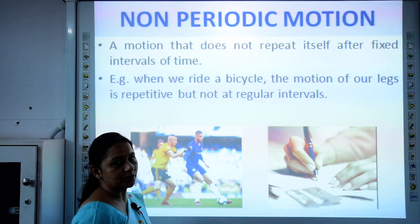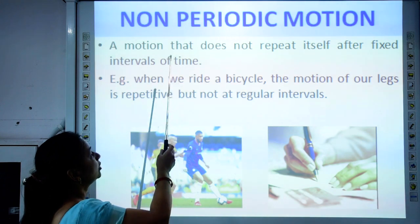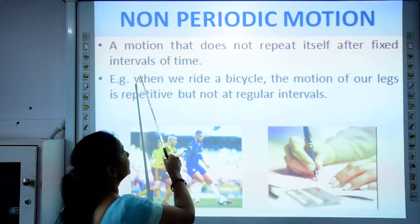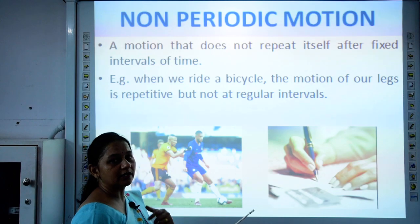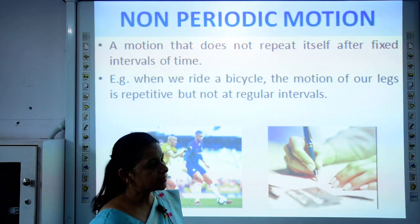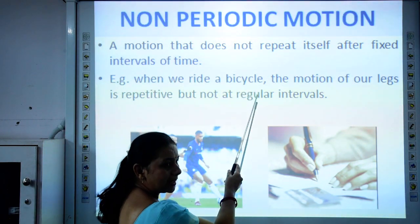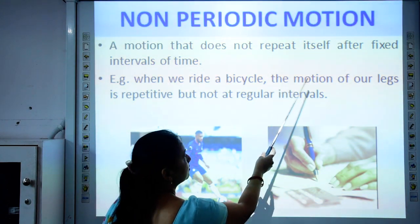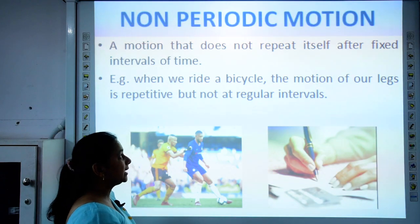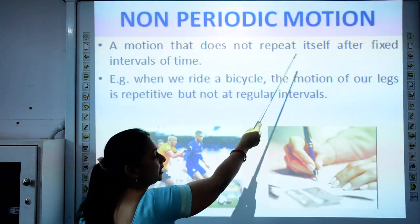Non-periodic motion is when the motion does not repeat itself after a fixed interval of time, or the interval of time in which the motion repeats is not the same. Example: when we ride a bicycle, the motion of our legs is repetitive, but it may or may not be at regular intervals. So we say it is non-periodic motion.